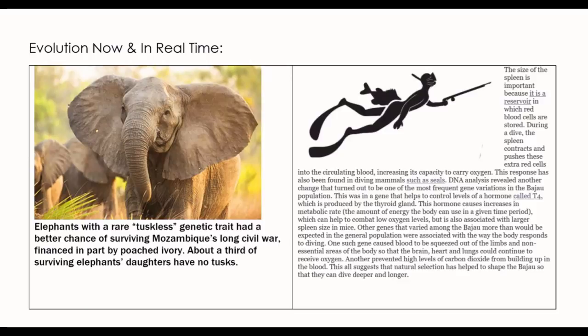Over on the left I have a picture of an elephant. There's a rare genetic trait that causes elephants to not have tusks. In Mozambique, there was a very long civil war and they were killing lots of elephants for ivory. What ended up happening is that elephants with this very rare genetic condition ended up surviving and passing on this trait. Survivors always pass on traits, so now in their population we are seeing elephants that do not have tusks — very strange.